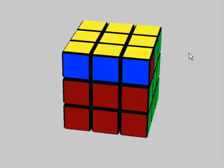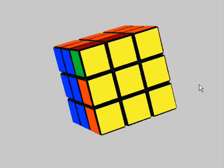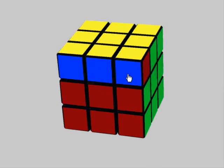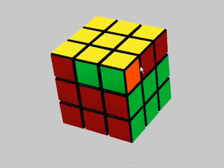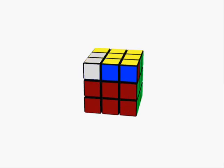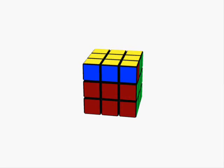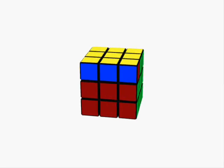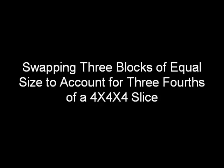Although it may not be obvious how to make this from scratch, we can achieve a similar result. All we need to do is apply a quarter turn, and then we have two corners swapped with only two edges affected. In this approach, we swapped three blocks of equal size and then applied a quarter turn, resulting in only two corners swapped. For the 4x4, we carry out the same idea by swapping three blocks of equal size to account for three-fourths of a 4x4 slice.